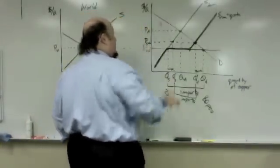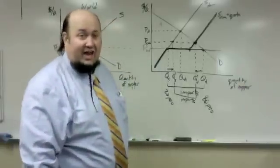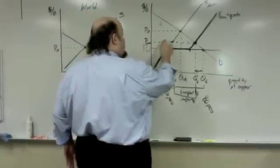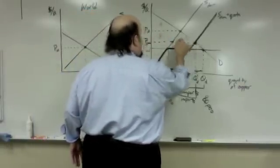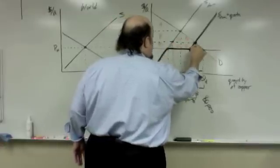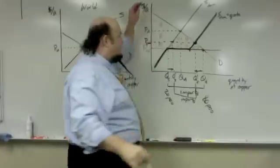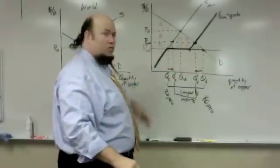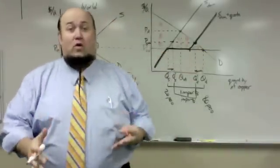Under autarky, it was just A. With world trade, they got B, C, D, E, F, G, H, I, and J. Everything under demand and above the world price now that they're buying at the world price.